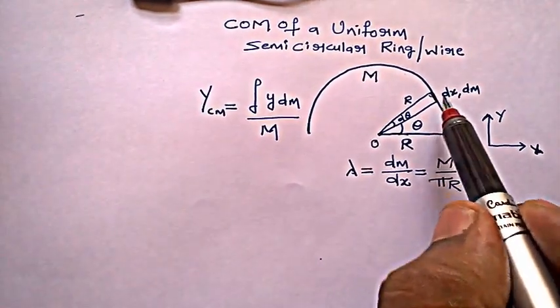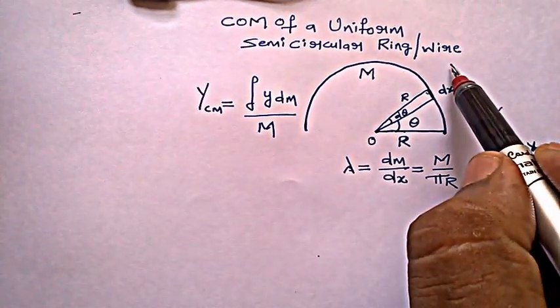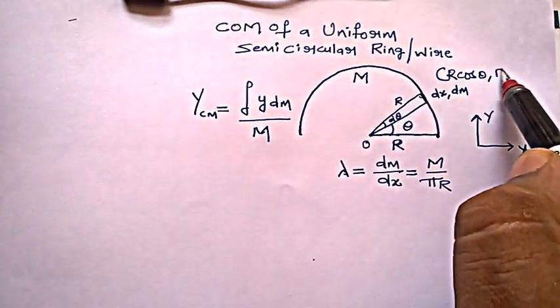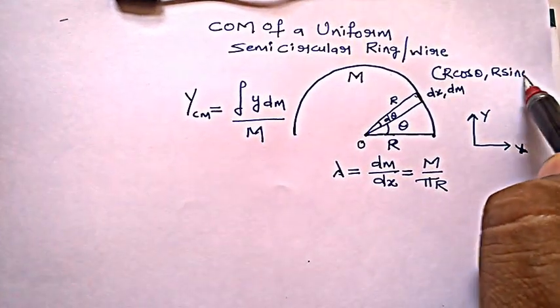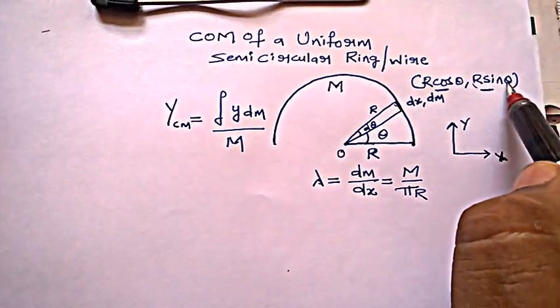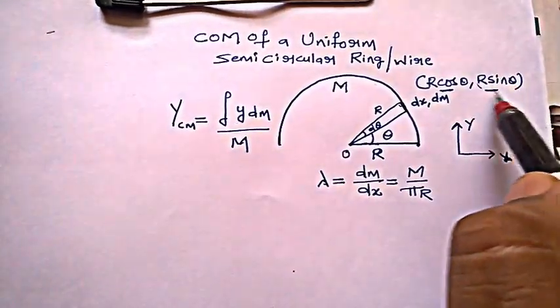So this point P is having a coordinate. The point P is simply r cos θ and r sin θ, which is the x coordinate is r cos θ and y coordinate is r sin θ. So my y coordinate is this r sin θ.